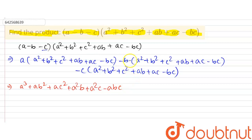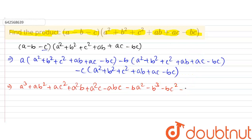Now multiplying minus b with the expression: minus b into a square equals minus ab square, minus b into b square equals minus b cube, minus b into c square equals minus bc square, minus b into ab equals minus ab square, minus b into ac equals minus abc, and minus b into minus bc equals plus b square c.